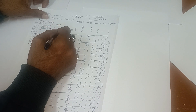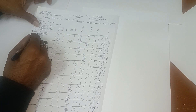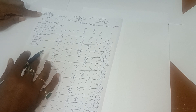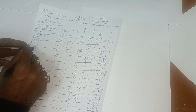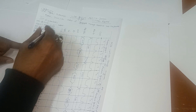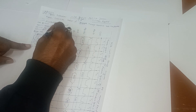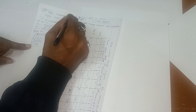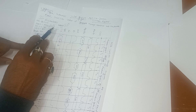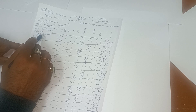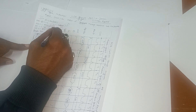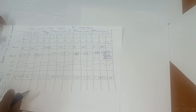The first machine cycle is opcode fetch requiring 4T states. The second machine cycle is memory read for the lower-order address byte — 3T states. Third machine cycle is memory read for the higher-order address byte — 3T states. The fourth machine cycle reads the content from memory location 7050H — 3T states. Total: 4+3+3+3 = 13T states.